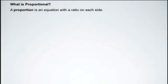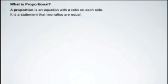Well, proportional comes from the idea that there is a proportion and a proportion is an equation with a ratio on each side. So it is a statement that the two ratios are equal. So for example, 3 over 2 is equal to 30 over 20. That is a proportion.